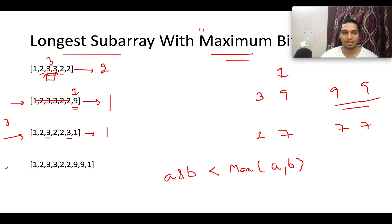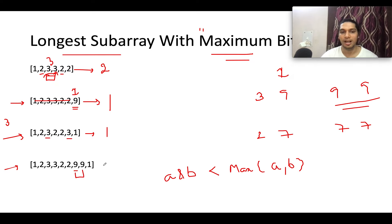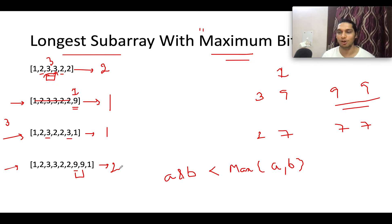In yet another case, the maximum element is 9, and the length of consecutive 9s is two, so the answer becomes two. I hope that makes sense — let's quickly walk through the coding section, following exactly the same steps just discussed.